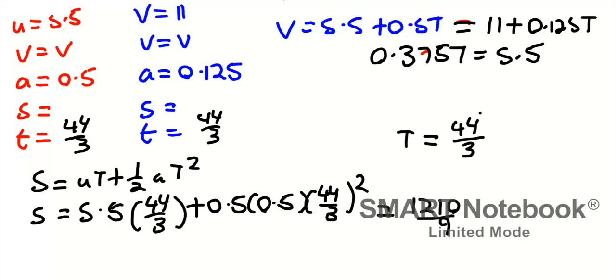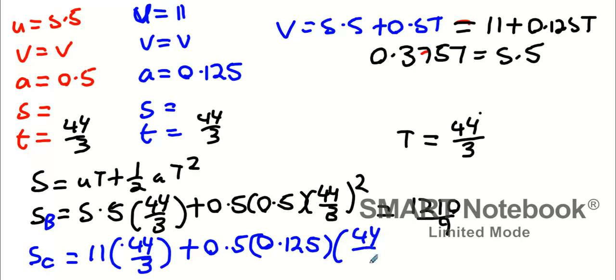And then for the car, S subscript car will be 11 times 44 over 3 plus one sixteenth times T squared. So that's 11 times 44 over 3 plus 0.125 times 44 over 3 squared. That's 1573 over 9.